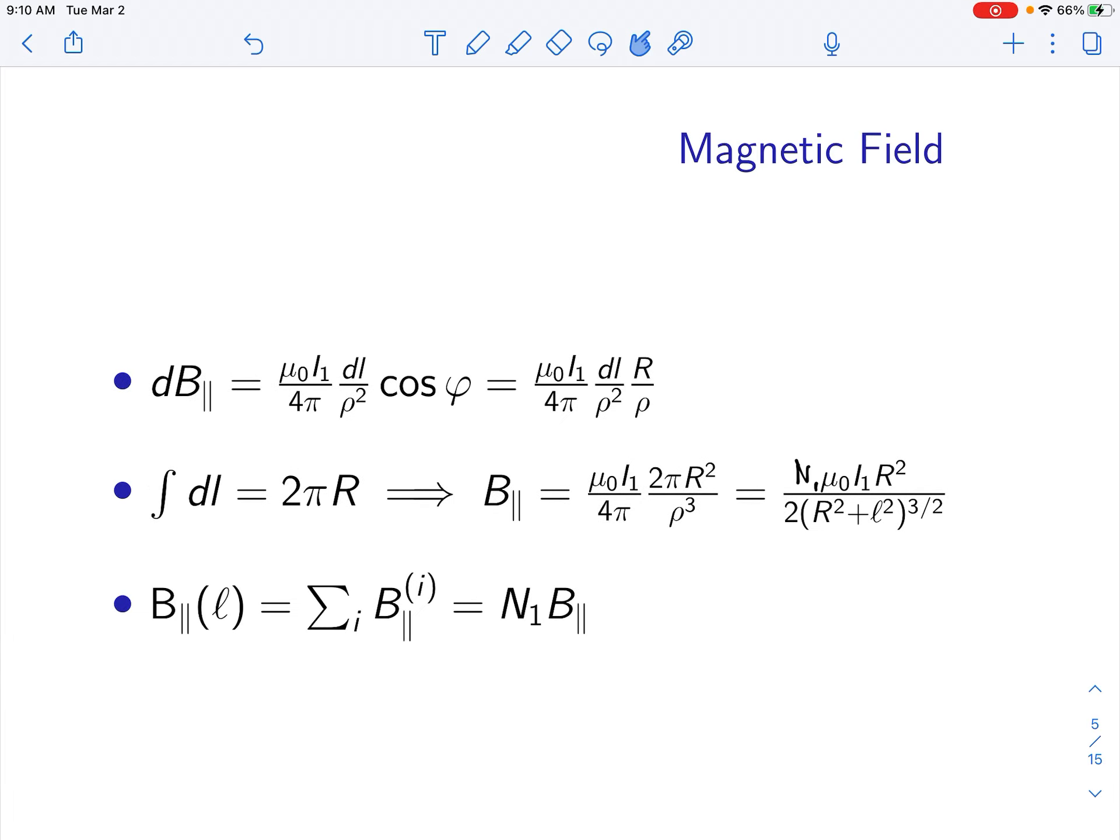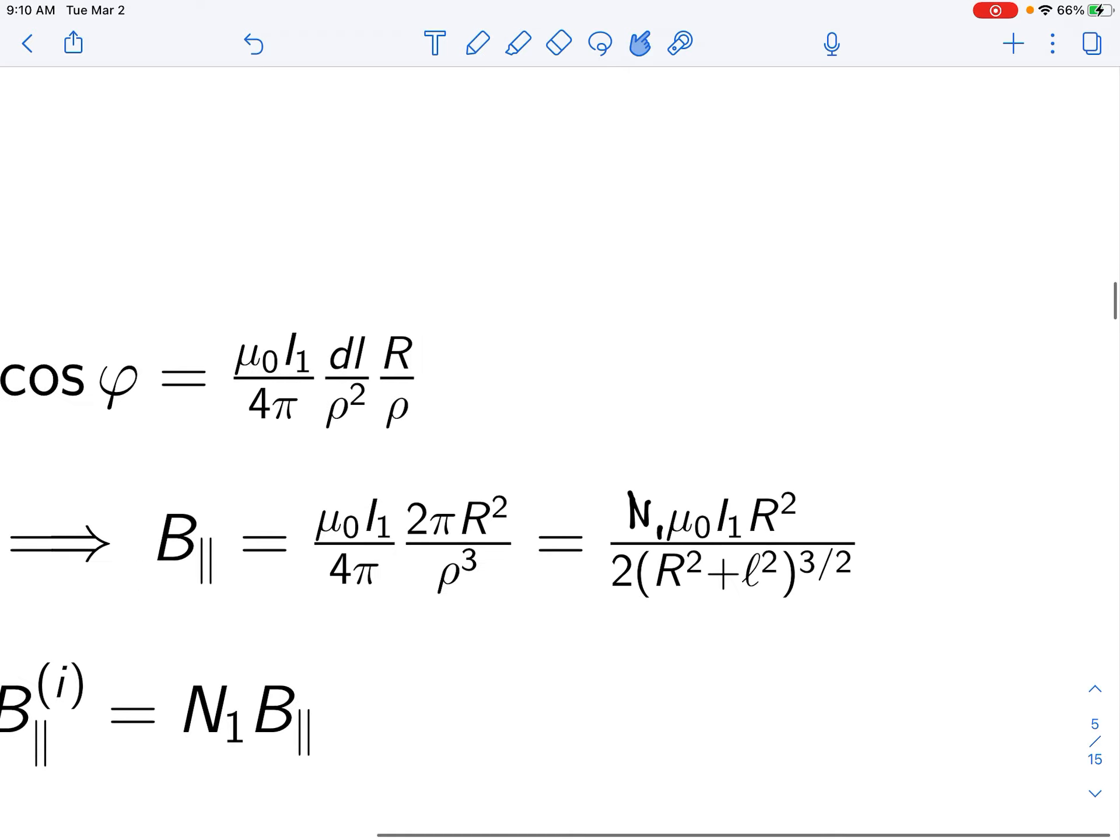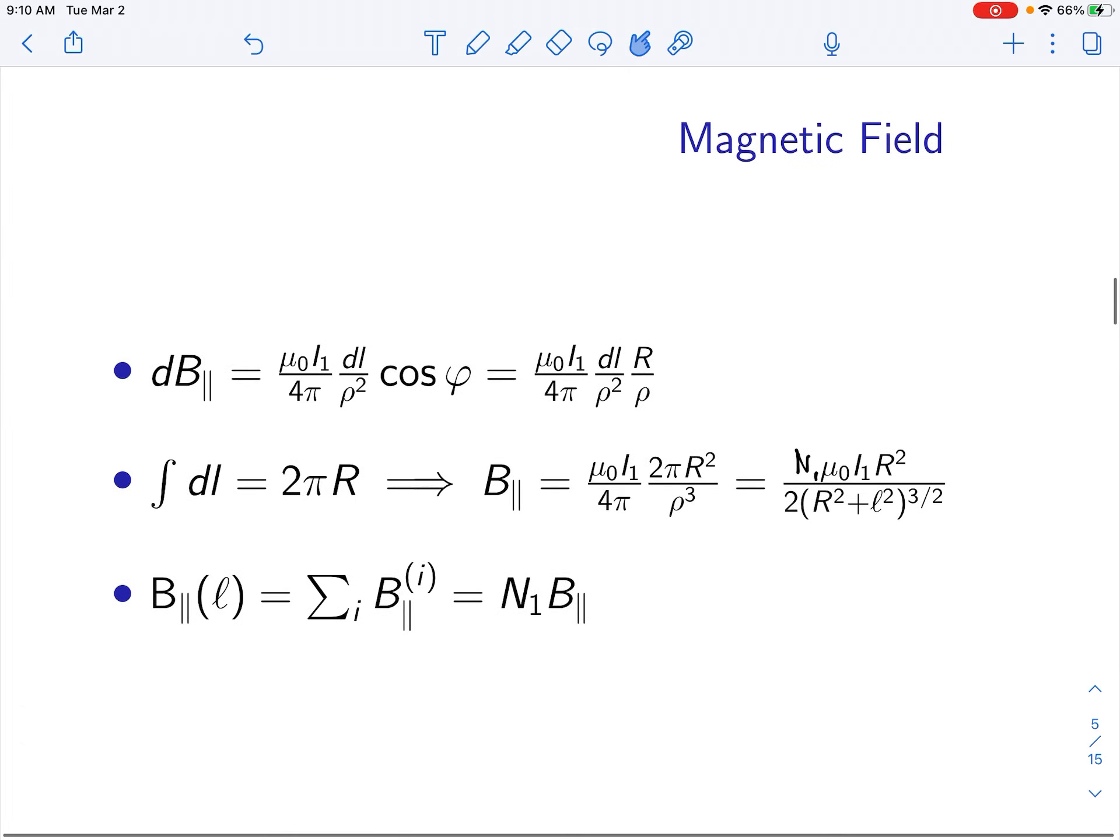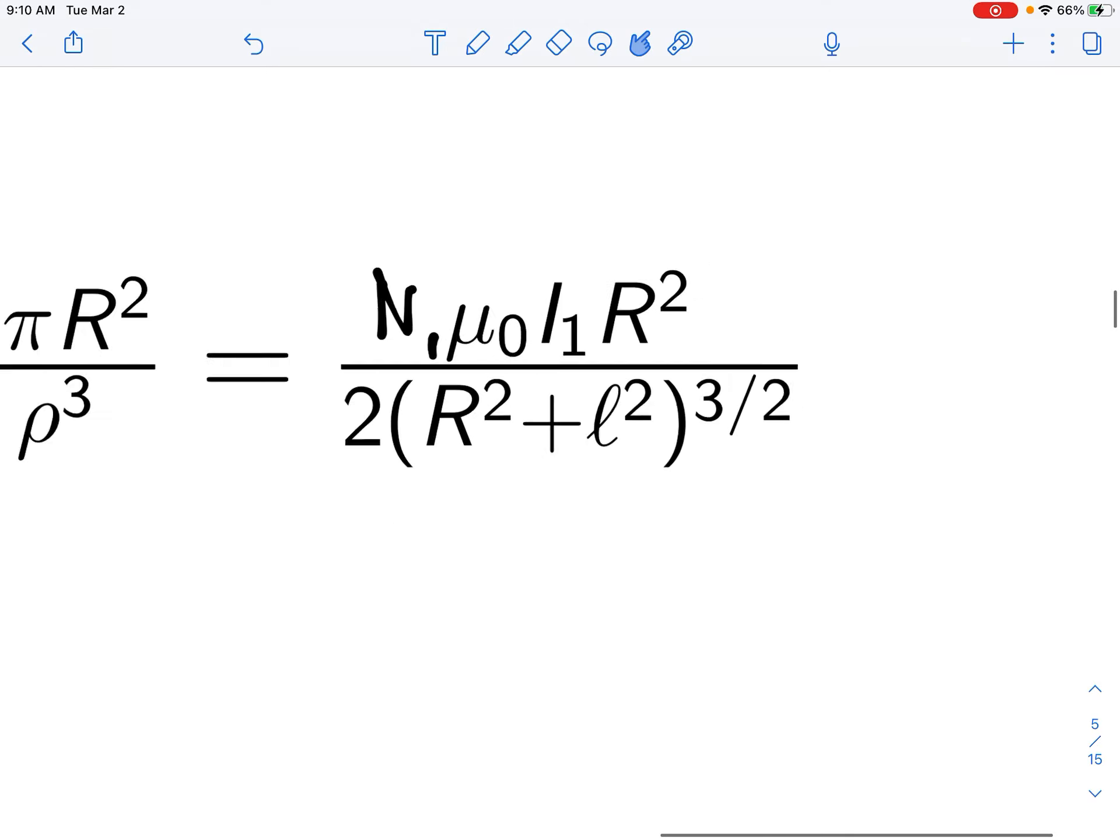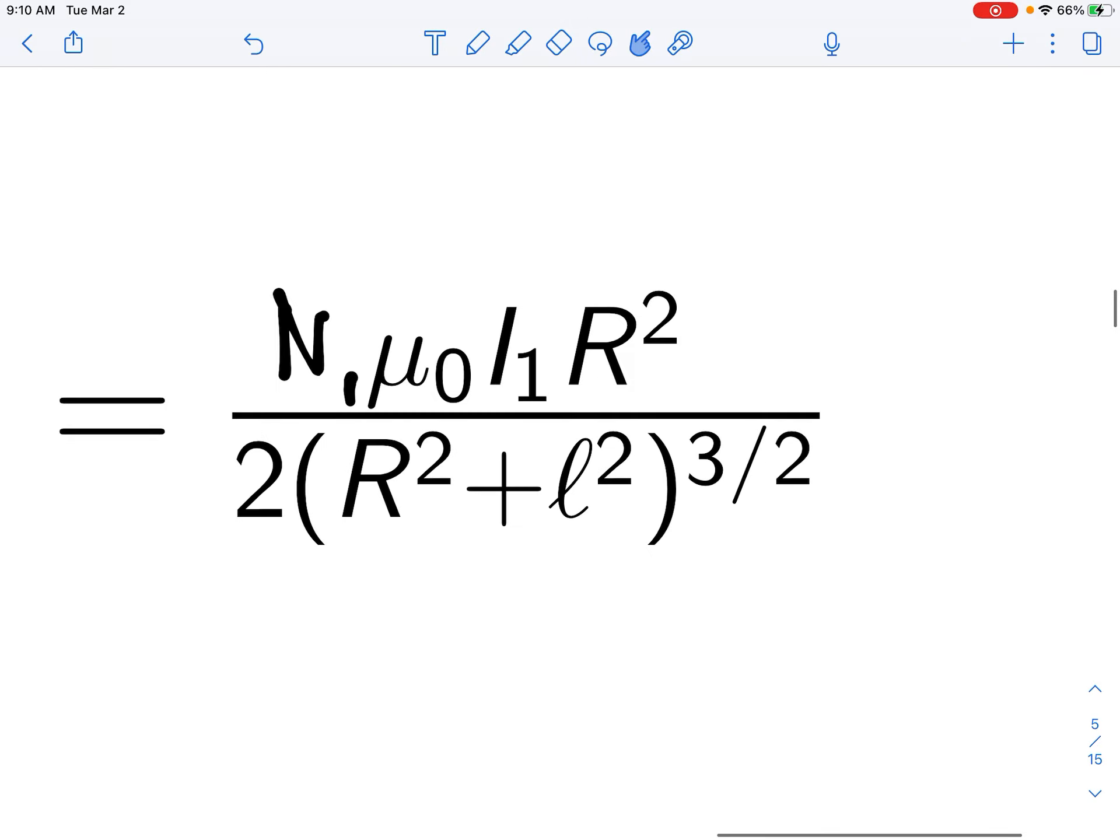Now we put this all together. Since it's a perpendicular magnetic component and that's made of N1 loops, this entire time we're considering the bigger loop. This bigger loop is going to have N1 turns, so magnetic field is just going to be N1 times B. So then you have this formula.